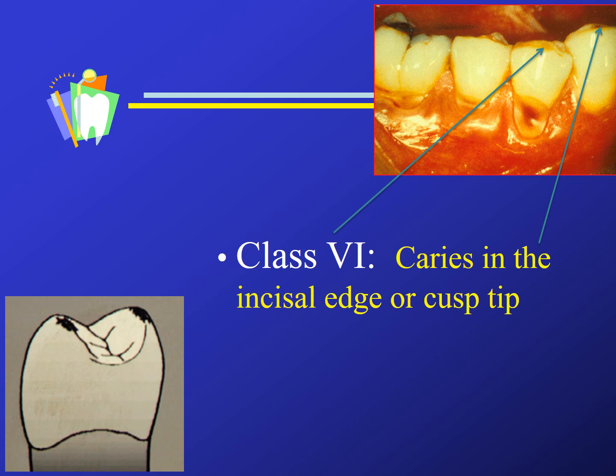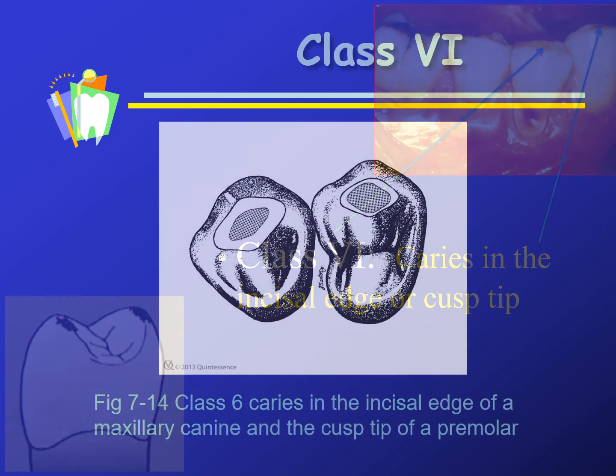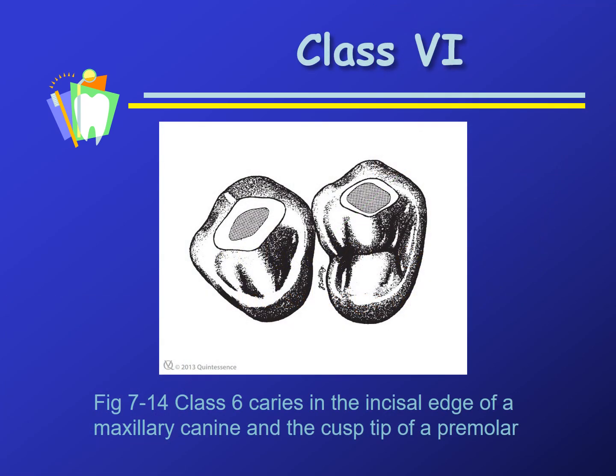Class six would be caries found in the incisal edge or the cusp tip area. Here we have a drawing of two premolars that have class six lesions on their cusp tips.